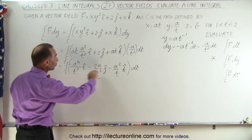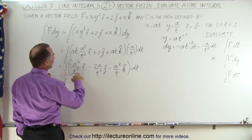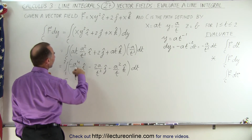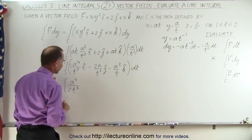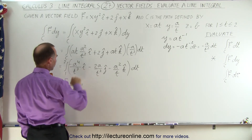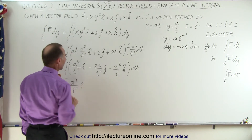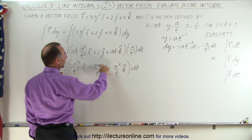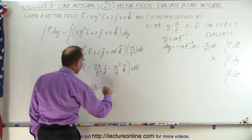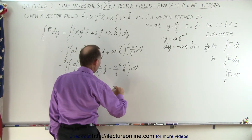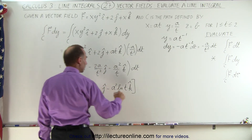Now we're ready to integrate, because everything is in terms of variable t. Integrating 1 over t cubed: that's t to the minus 3, which becomes t to the minus 2, divided by the exponent minus 2, giving a to the fourth divided by 2t squared in the i direction. For the j term, t to the minus 2 integrates to t to the minus 1, giving plus 2a over t in the j direction — the two negatives cancel. Finally, we get minus a squared times the natural log of t in the k direction. The whole thing is evaluated from 1 to 2.